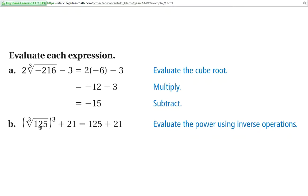Over here we have the cube root of 125 and then raise that to the 3rd power. So we know the cube root of 125 is actually 5. And then you actually reverse it and 5 to the 3rd power is actually 125. And then add 21 to it, you get 146.